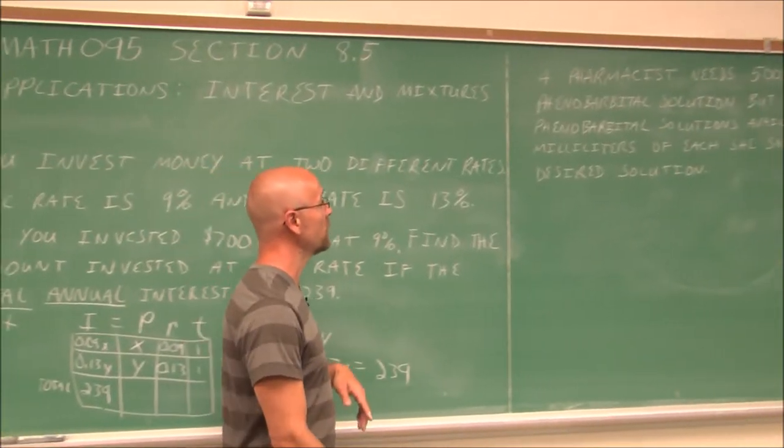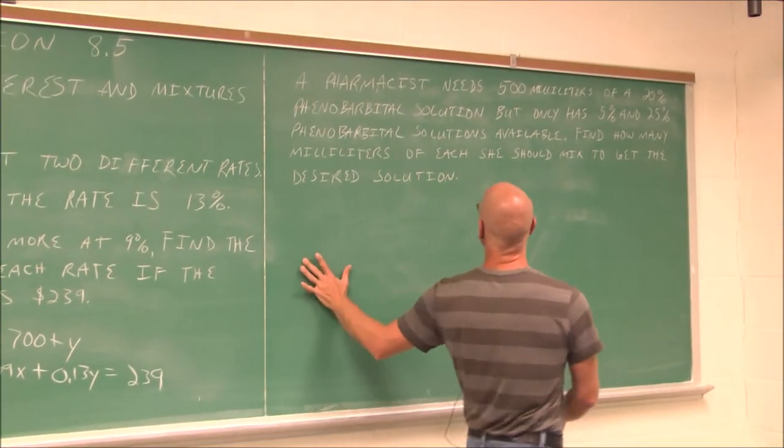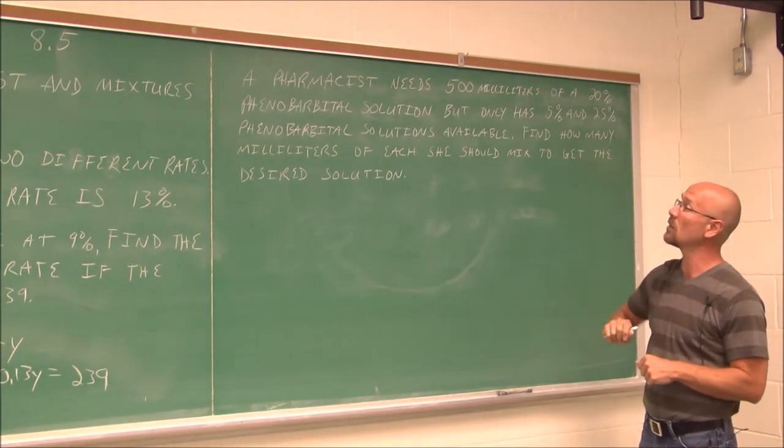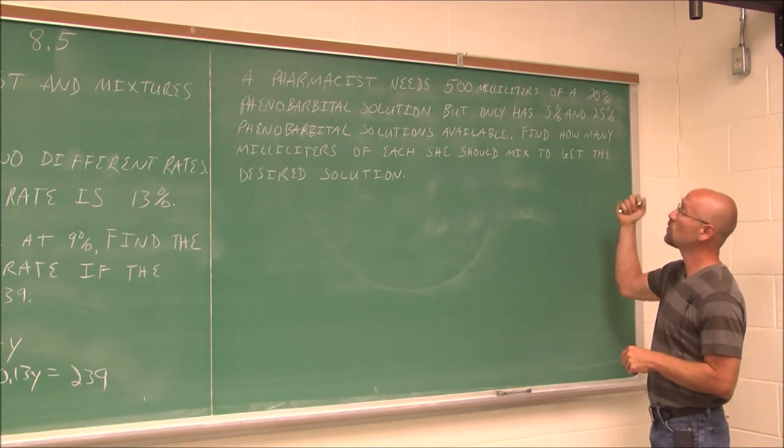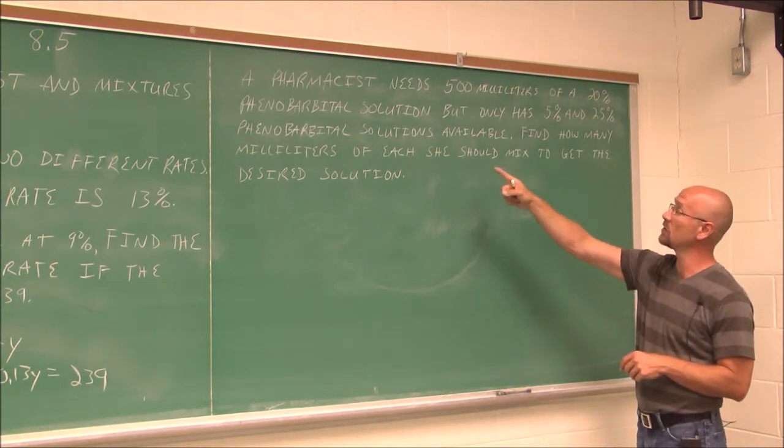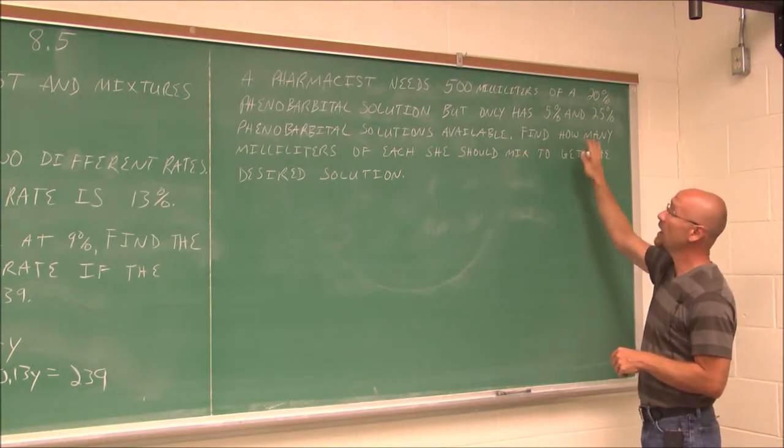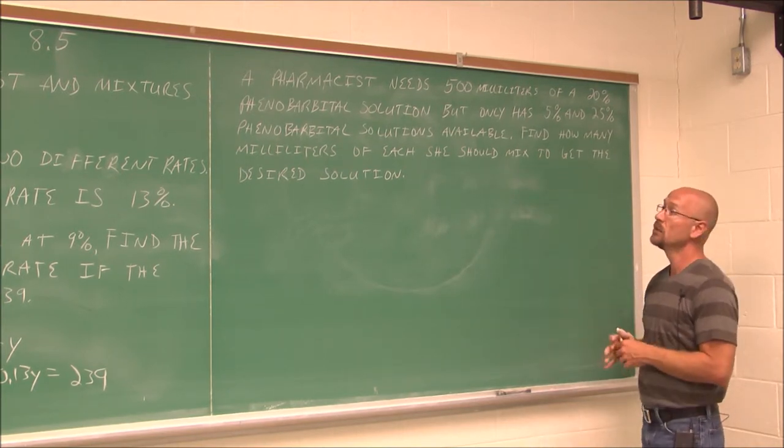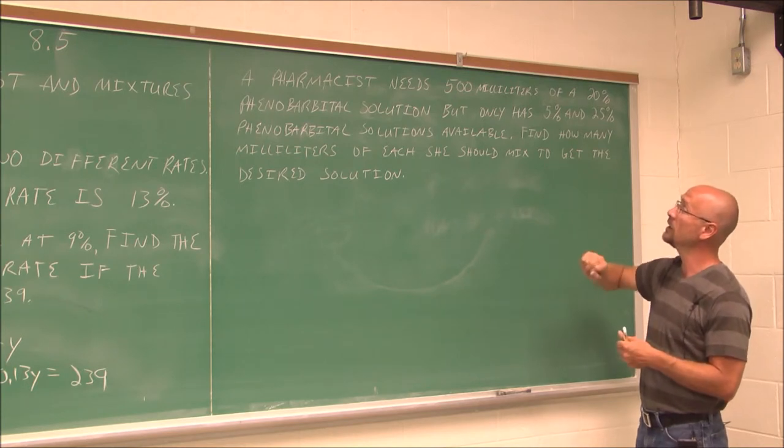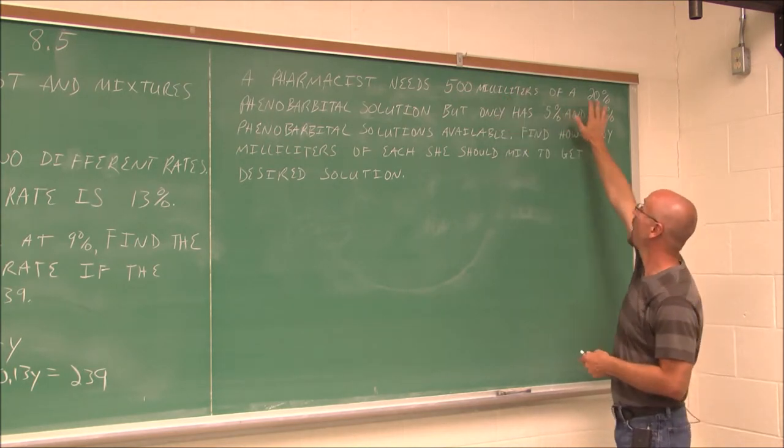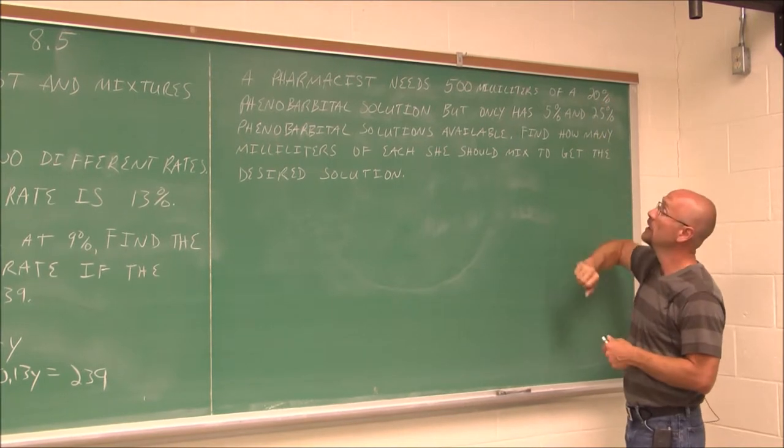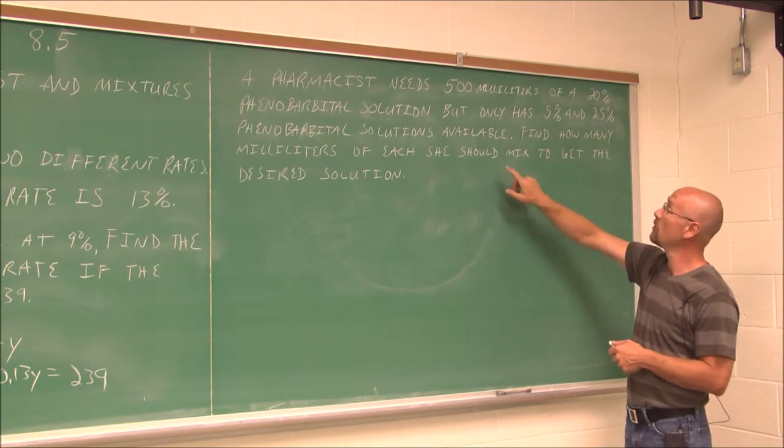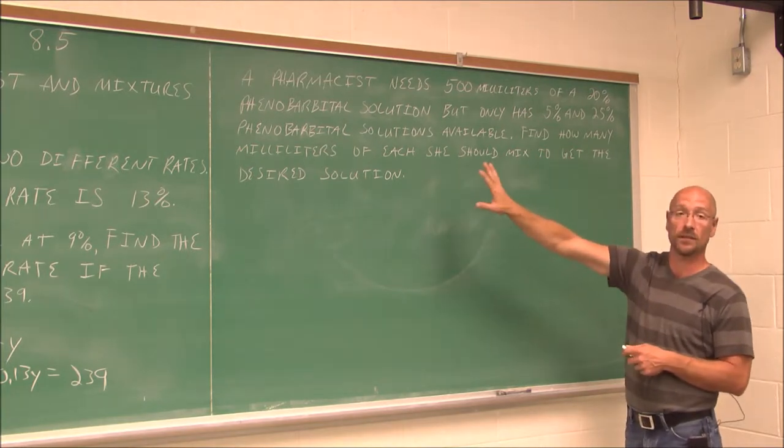All right, now we're going to look at a mixture equation. It says, a pharmacist needs 500 milliliters of a 20% phenobarbital solution, but only has 5% and 25% phenobarbital solutions available. Find how many milliliters of each she should mix to get the desired solution. So if we think about what's happening here, we want a certain volume at a certain concentration, but we only have different concentrations available.